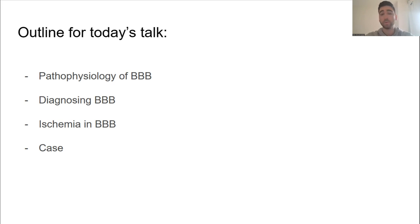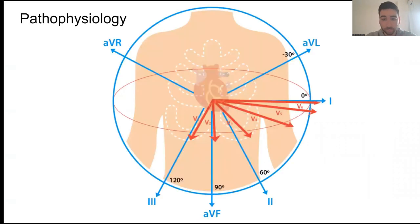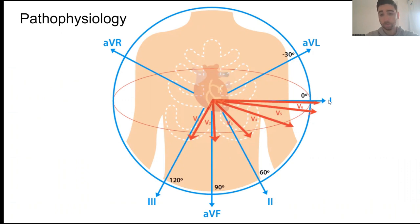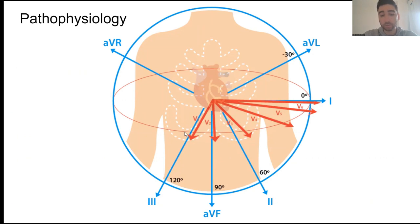Before we get started, it's very important to review this model that depicts how electricity is sensed by the different leads in the EKG. You can see the precordial leads V1 through V6 in red and the limb leads AVR, AVL, 2, 3, AVF, and lead one. For bundle branch blocks, we're going to be looking at leads one and V6, which are to the left of the patient. V1 is a precordial lead towards the patient's right, sensing electricity moving towards the right of the heart.